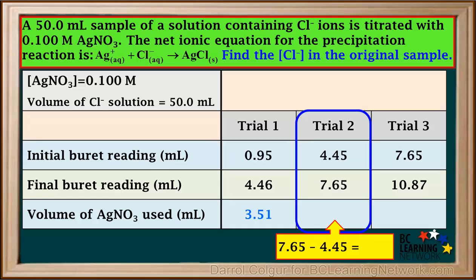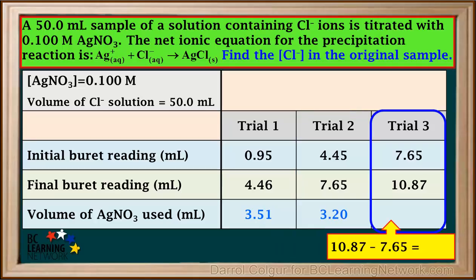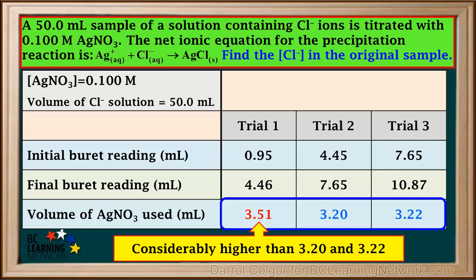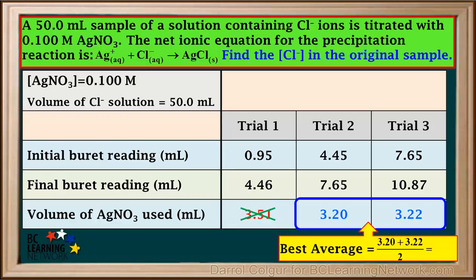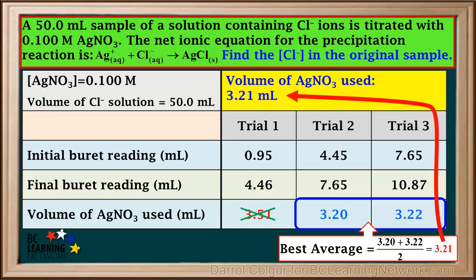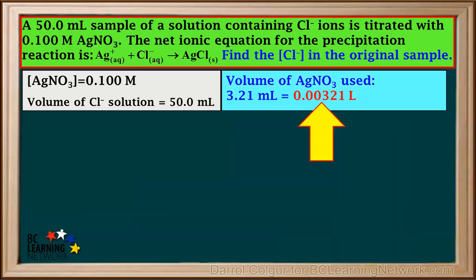The first thing we need to do is calculate the volume of AgNO3 solution used in each trial by subtracting the initial burette reading from the final burette reading. In trial one, it's 4.46 minus 0.95, which is 3.51 milliliters. For trial two, the volume is 7.65 minus 4.45, which is 3.20 milliliters. And in trial three, the volume used is 10.87 minus 7.65, which is 3.22 milliliters. Since 3.51 milliliters is considerably higher than the 3.20 and 3.22 used in trials two and three, we discard the value of 3.51. The best average volume of AgNO3 is (3.20 + 3.22) / 2 = 3.21 milliliters, which we convert to 0.00321 liters.